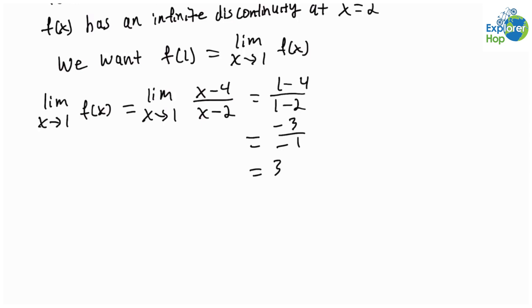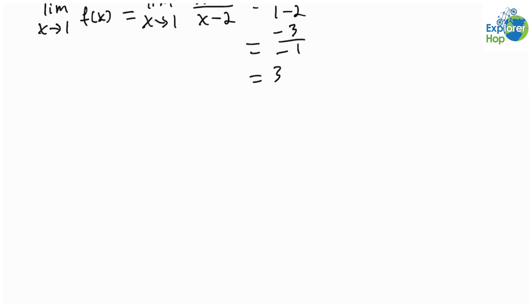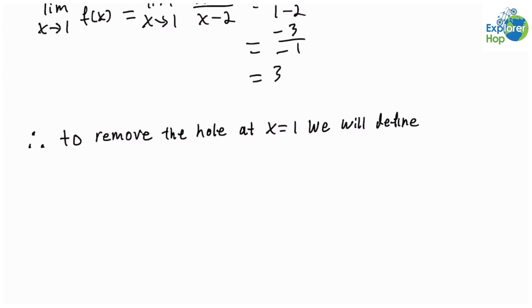So this means that we will set f(1) equal to 3. Therefore, to remove the hole at x equals 1, we will define f(x) such that: